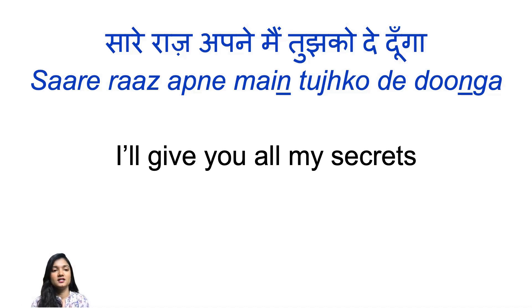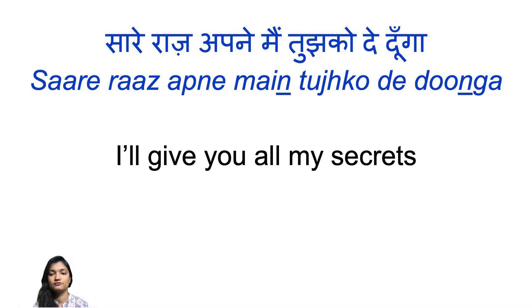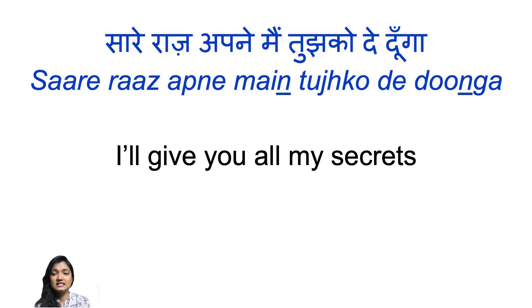De doonga means will give, similar to doonga. When we use two verbs together, the second verb acts only as a helping verb formed according to the tense, while the main verb is de. For now, just remember: de doonga means I will give. The sentence means: I will give you all my secrets — I'll tell you all my secrets. The rearranged sentence should be: Main tujko apne sare raz de doonga.